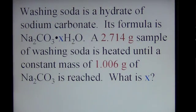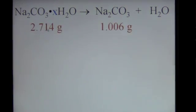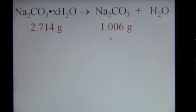Let's take a look at some experimental data. We're going to start off by heating a hydrated salt, and the mass of our hydrated salt is 2.714 grams. Upon heating, we're going to liberate the water and drive it off. Not all hydrates will allow you to drive off the water by heating, but quite a few can. In this case, we're going to form an anhydrous salt — that is, the salt without the water — and that mass is 1.006 grams of sodium carbonate.